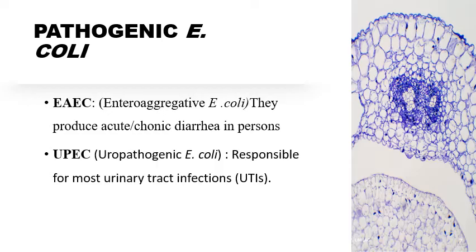The last pathotype is UPEC, uropathogenic E. coli, which is responsible for most urinary tract infections. This type of E. coli is not usually associated with food; it is associated with nosocomial infection, causing urinary tract infection in both males and females. Most females experience UTI more than males because of the female anatomical design, which allows easier contamination by E. coli at the vaginal area. All these E. coli pathotypes are strains of E. coli under the same species.